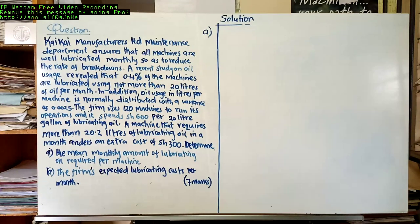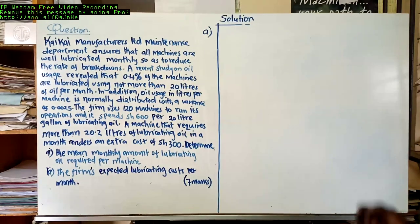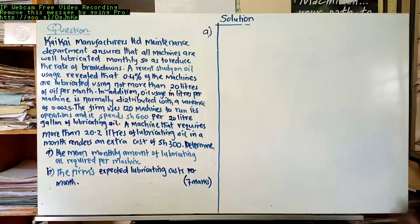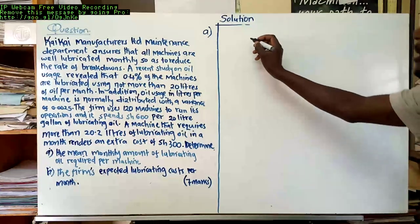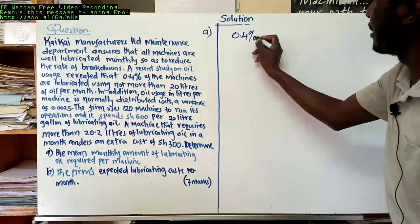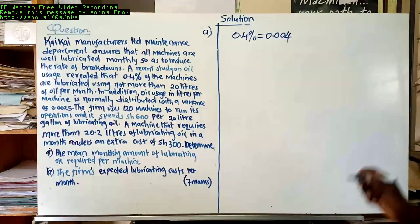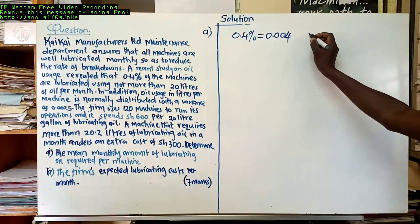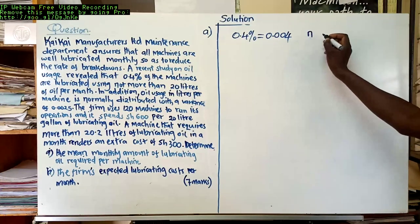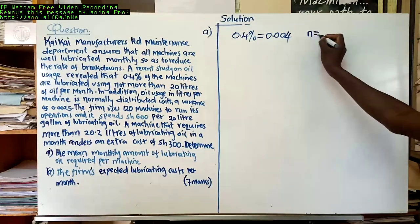This is not a difficult question if we go through it one step at a time and underline the important information. A recent study on oil usage revealed that 0.4 percent of the machines — an important value — which can be written as 0.004. The number of machines N is 120.